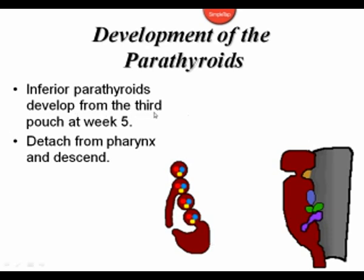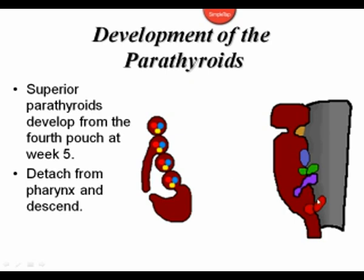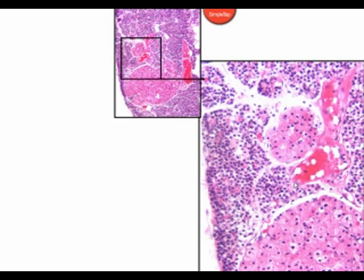The inferior parathyroids develop from the third pouch; at about week five they detach from the pharynx, migrate downward, and end up at the inferior pole of the thyroid gland around week seven. The superior parathyroids develop from the fourth pouch; they migrate downward a little later in development but do not descend as far, ending up at the superior pole of the thyroid. Here you can see the parathyroid tissue histologically.